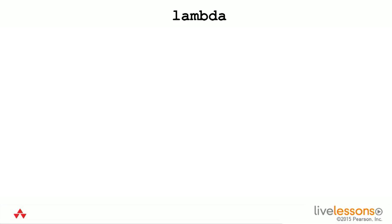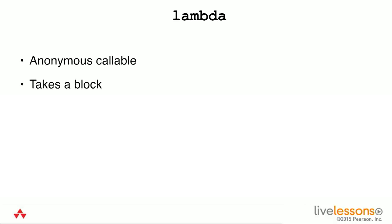Just like procs, lambdas are also an anonymous callable in Ruby that take a block of code and can be passed around. You can create a lambda with the lambda keyword or the stabby lambda syntax on more recent Rubies. Unlike procs, lambdas do get a stack frame and that means using the return keyword inside them is safe. They behave in the exact same way a function does, popping the current stack frame and returning the flow of execution to their caller.